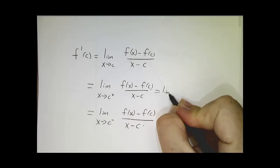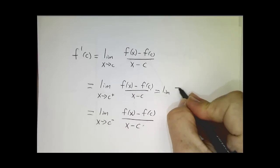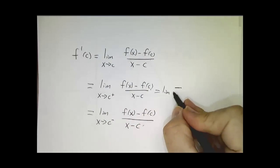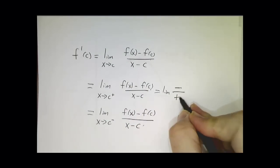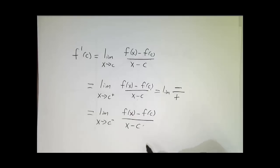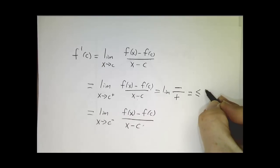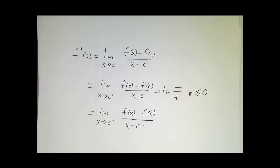this is the limit of negative things, because f of x is less than f of c, divided by positive numbers. And the limit of negative over positive numbers can't be positive.